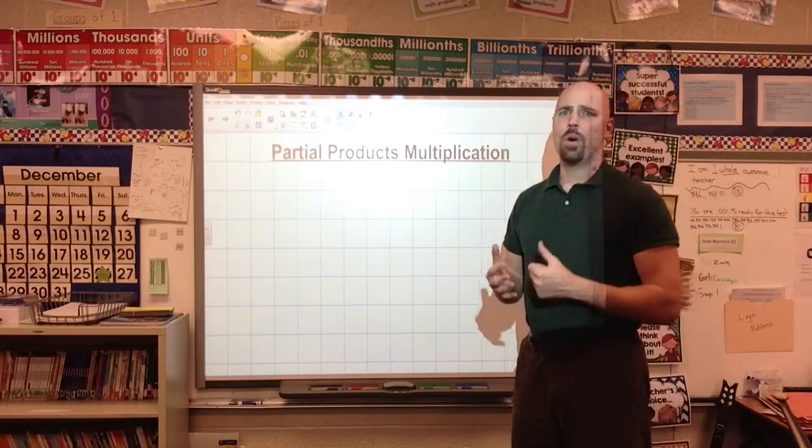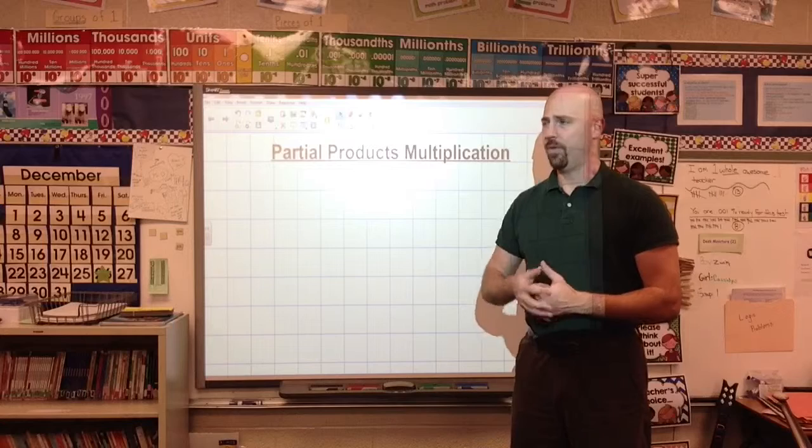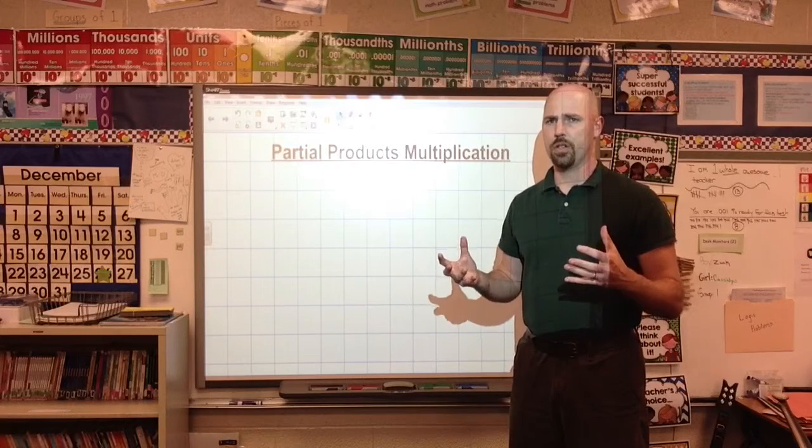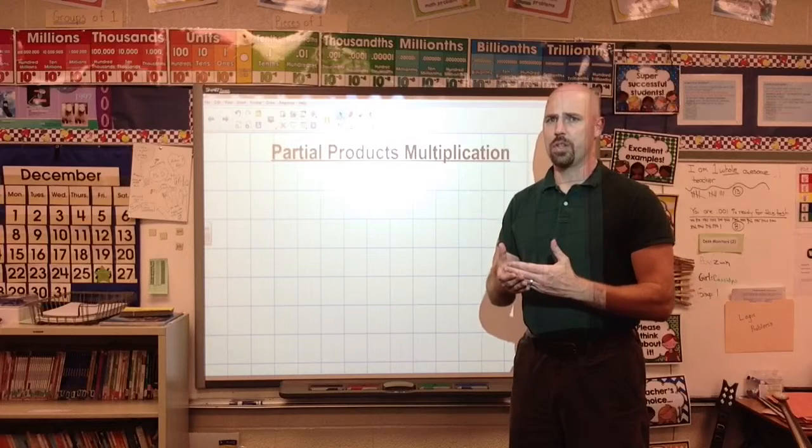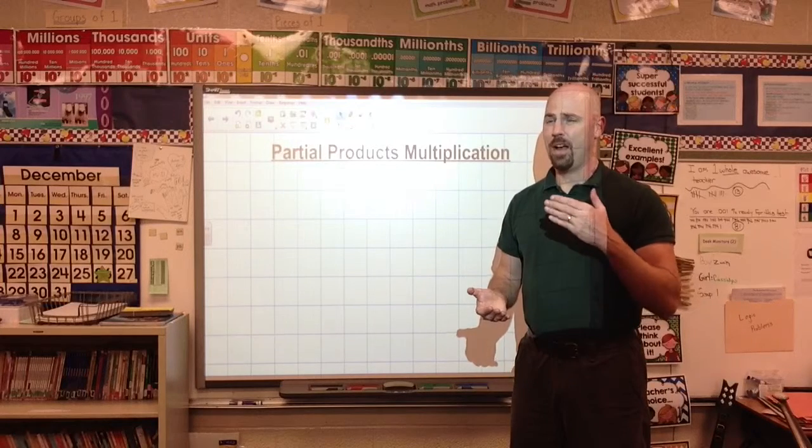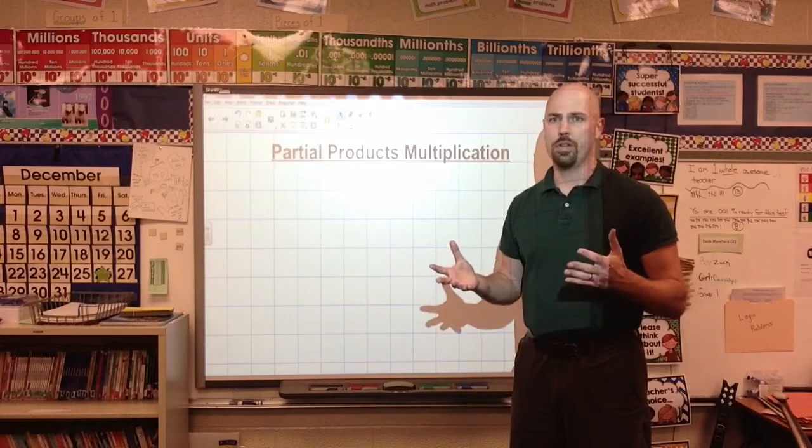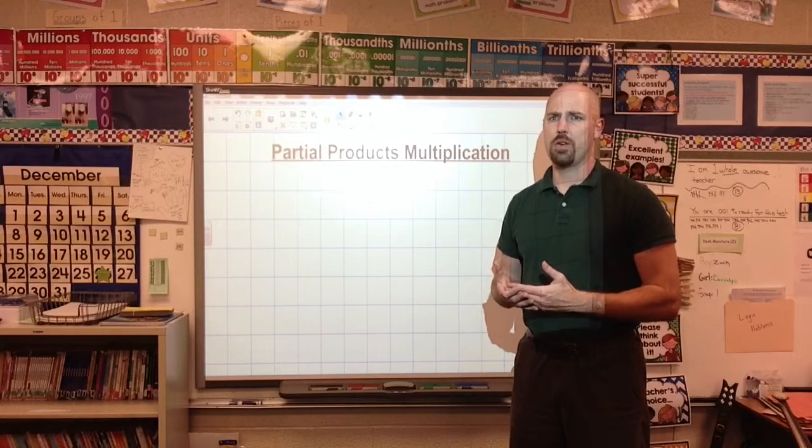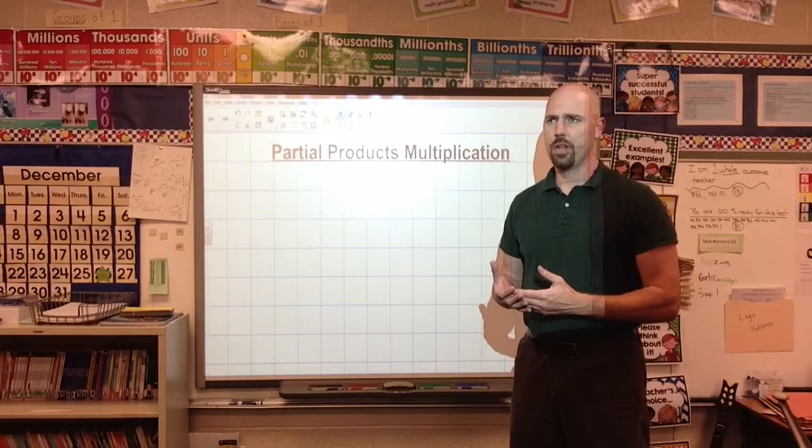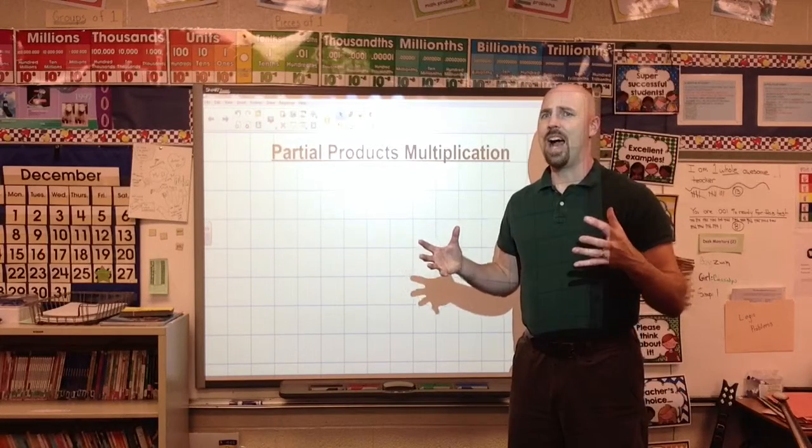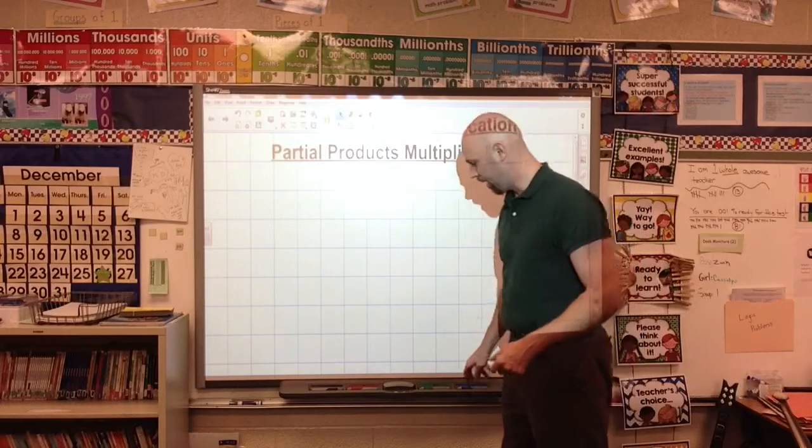This is not a technique that I'm going to want them to use the rest of their life. Down the road, as we work through and I see that we understand how multiplication works, we start moving towards the traditional method. And I'll tell them on their tests, I want to see traditional. On their homeworks, I want to see traditional when we get there. We call it rowing and destroying here. But let's start off just talking about partial products and showing how these pieces work together.